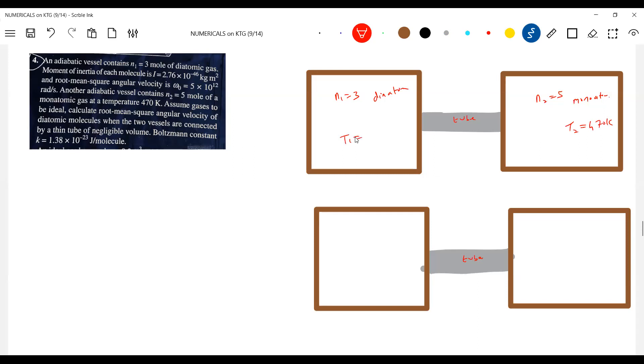Now what happens? Calculate the root mean square angle of diatomic gas when the two vessels are connected by a thin tube of negligible volume. So there is a valve. I'm going to open the valve. Valve closed, now the valve is opened. I think as a teacher I should not give further examples on valve. Water tap, you rotate it, valve similar to that.